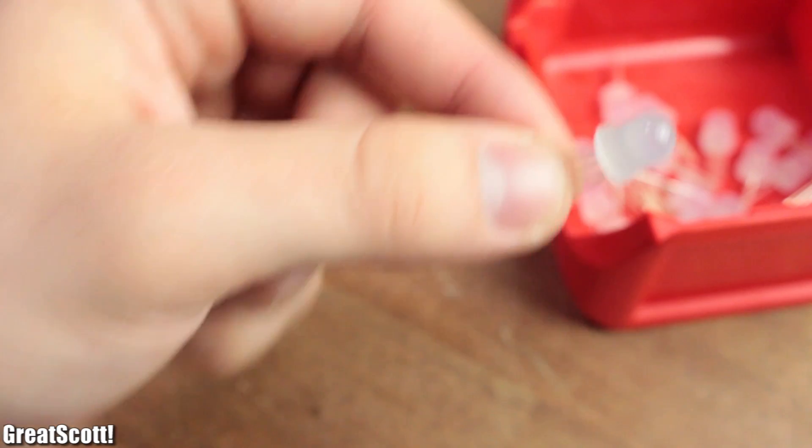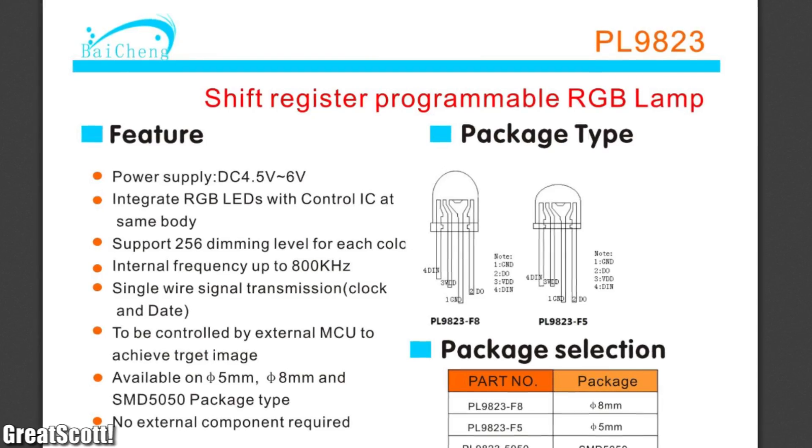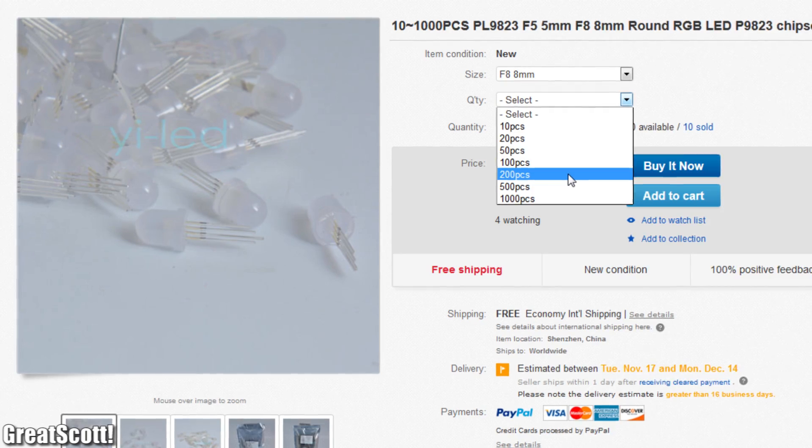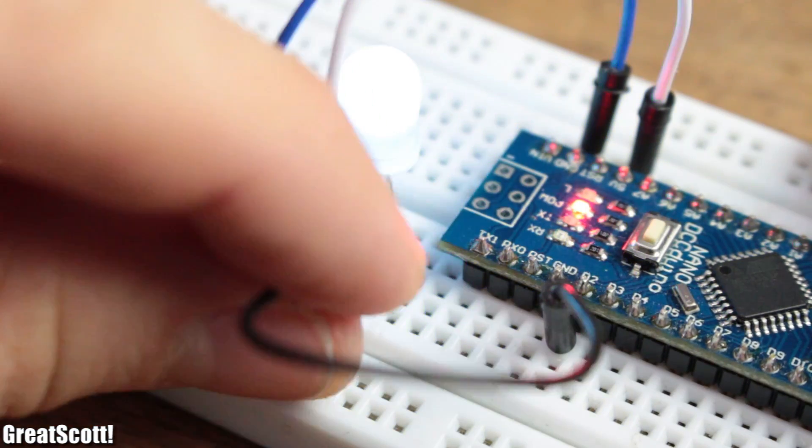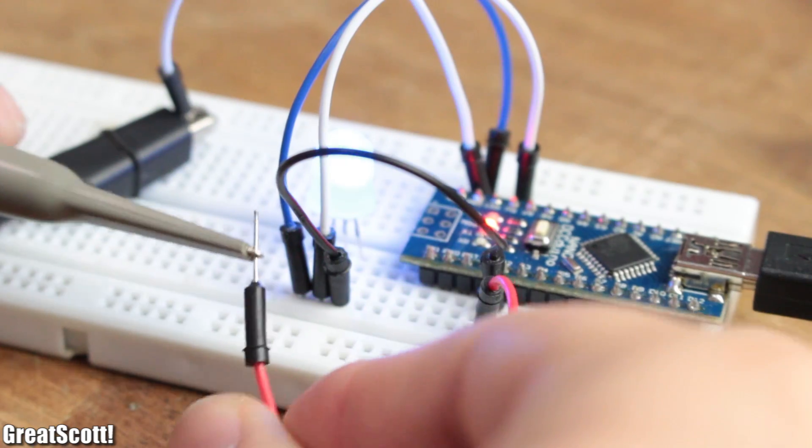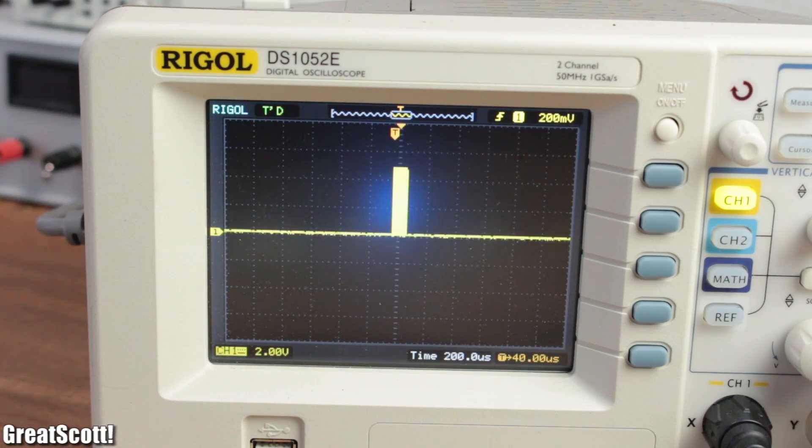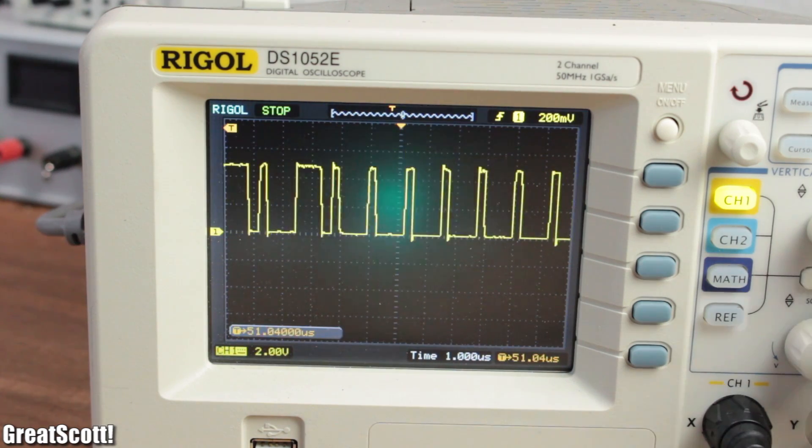The main component of this build are PL9823 8mm LEDs. Those have an integrated control circuit, which means we only need to send a 24-bit data signal to them, which consists of the desired color, and they do the rest.